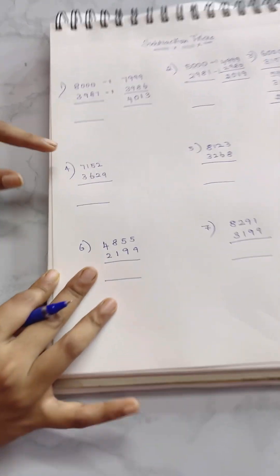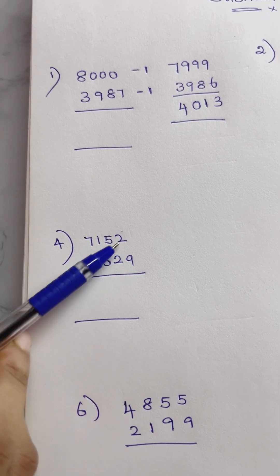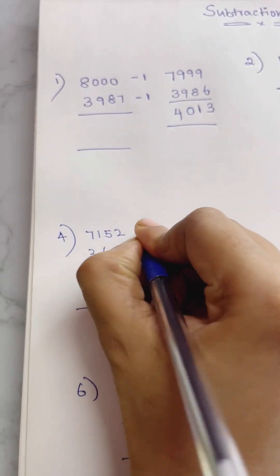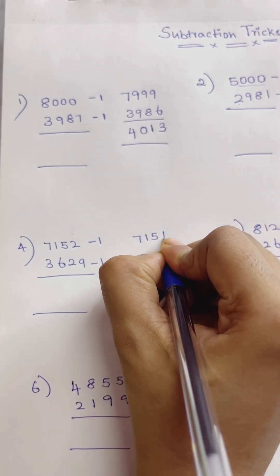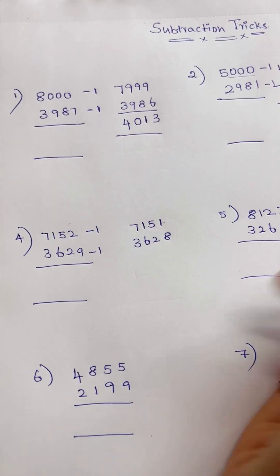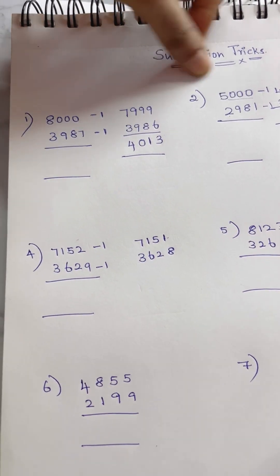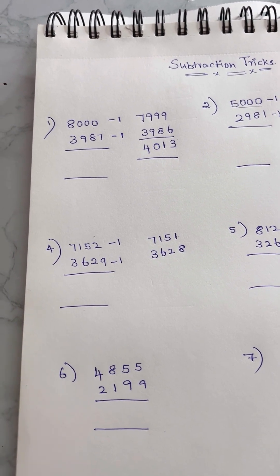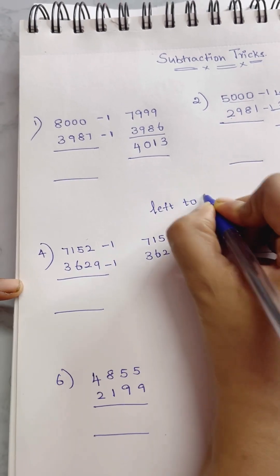Now I've got a sum of 9 places. If I do this, I'll need to borrow. Correct? The sum is 7152 minus 3629. Using the subtract method, I don't have to do normal borrowing. So in this case, I've explained the method. Let's try the same method: 7152 minus 1 is 7151, and 3629 minus 1 is 3628.